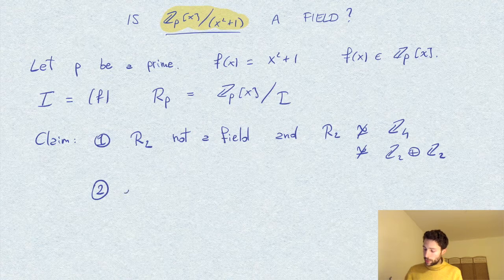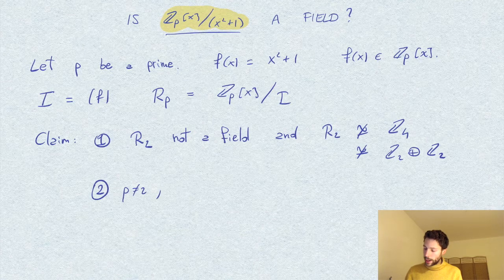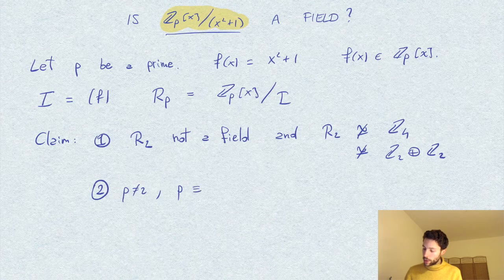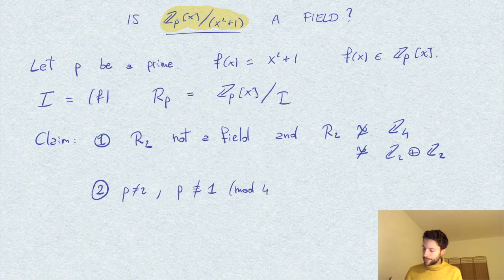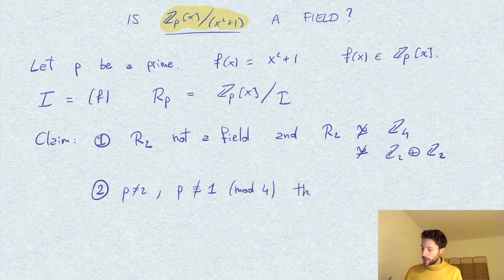And then secondly, I want to show that if p is not 2 and also not congruent to 1 modulo 4, then R_p is a field.